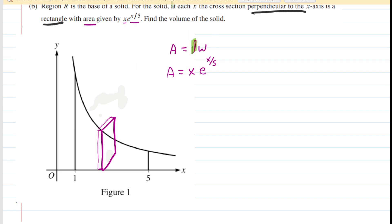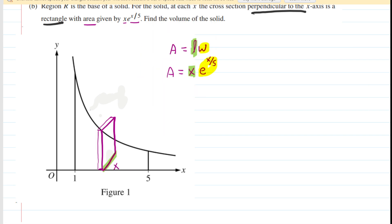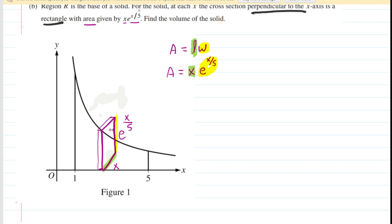We're told that the area of this prism is represented by x times e to the x divided by 5. Because that's the area of a rectangle — length times width — they're telling us the length of the rectangle is x and the width is e to the x over 5. We can label those sides in the diagram. And then because it's a rectangular prism there's some thickness to it. The thickness runs in a horizontal direction — the x direction — but it's a very tiny thickness. In calculus, when you have a very tiny thickness you use differential notation, so the thickness of this rectangular prism is dx.